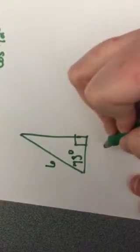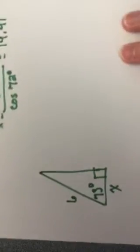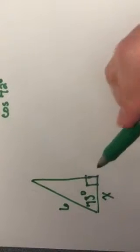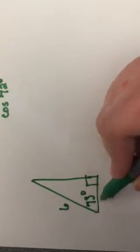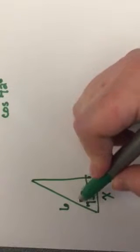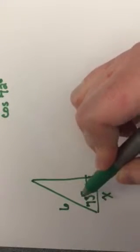This side is 6. This side is x. So again, identify which sides they give us. They give us an adjacent, and they give us our hypotenuse. And it's always in reference to the angle measure that they give us.